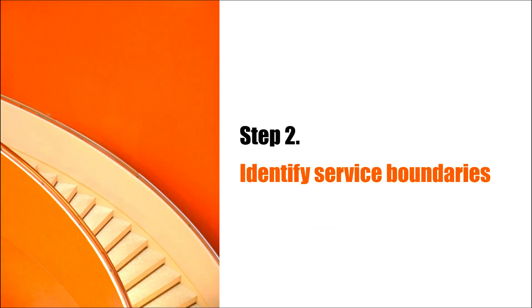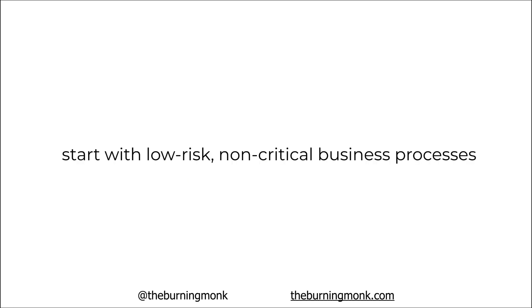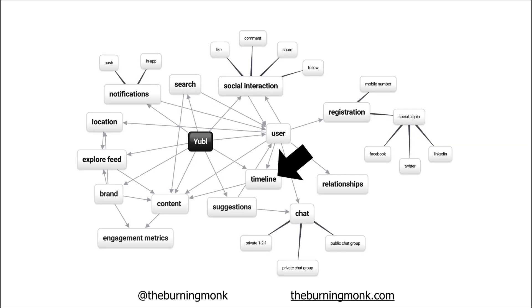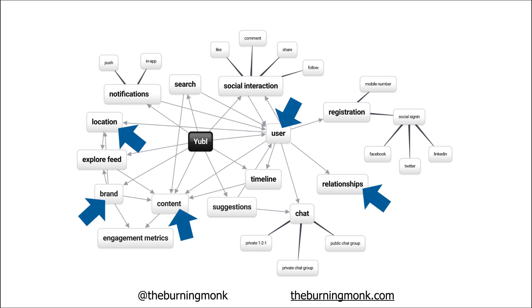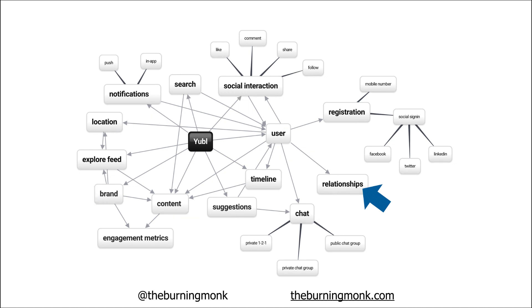Step two is to start identifying those service boundaries within your monolith. This is where you play it safe and dip your toe in the water rather than jumping in. It's really useful to start with having a mind map of your application — all the different components that make up your business — and start the migration with those low-risk, non-critical business processes first, then use the strangler pattern to incrementally migrate the legacy monolith by gradually replacing pieces of it and moving them to the new system. Looking at the mind map I had for Yabo, the social network, we had features including the timeline, search, notifications, suggestions, chat, and so on, that all involve entities in the system such as user, location, content, relationships, and so on — all useful starting points for identifying service boundaries.